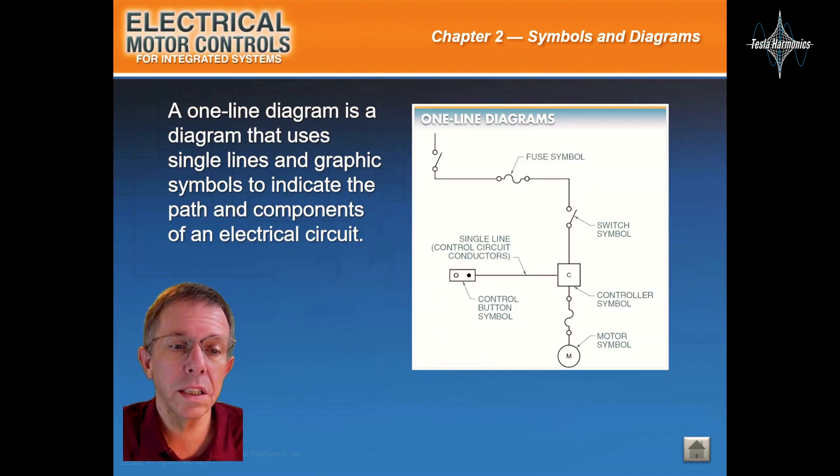A one-line diagram is a diagram that uses single lines and graphic symbols to indicate the path and components of an electrical circuit.